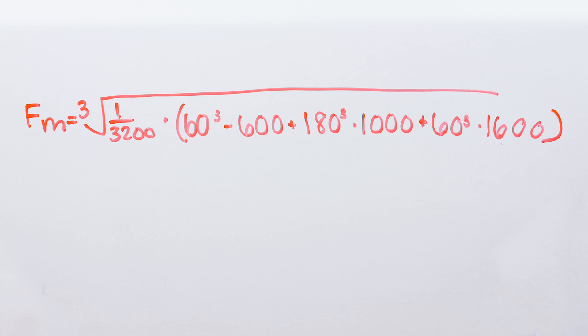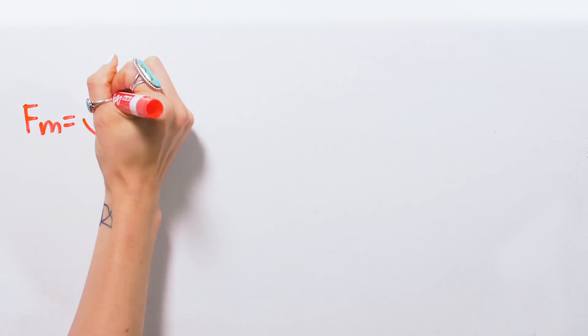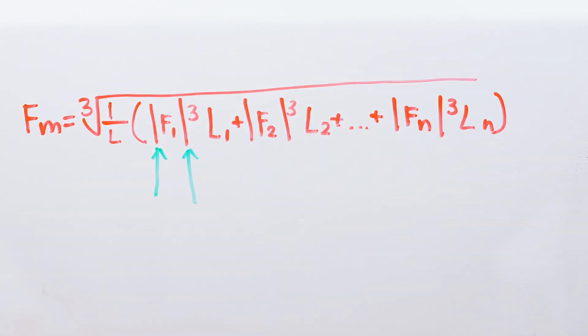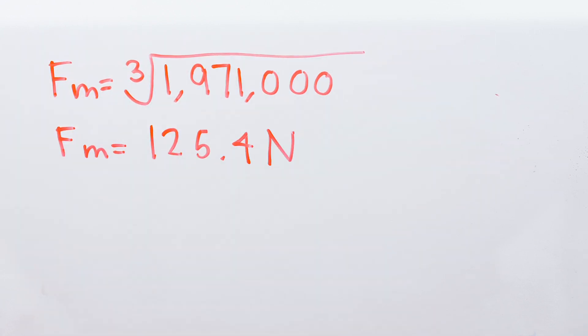Notice that the total travel is 3,200 millimeters, since the move includes a total of 1,600 millimeters in one direction, plus the 1,600 millimeters return travel to the original starting position. Also notice that the load is shown in brackets, meaning that we're taking the absolute value of the load, so even if the load is acting in the reverse direction, it's still added to, rather than subtracted from, the total load. So the mean equivalent dynamic load, F sub m, in this application is 125.4 newtons.